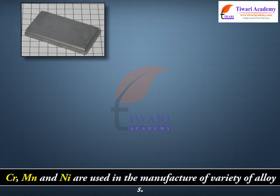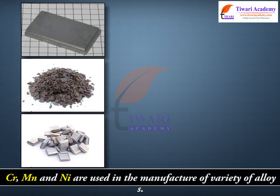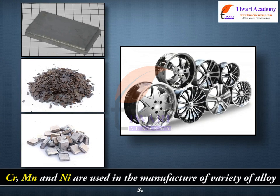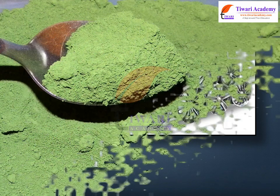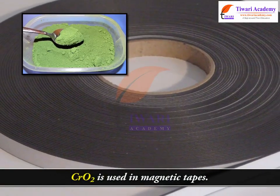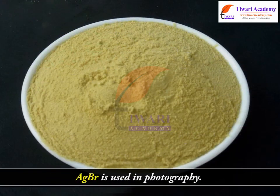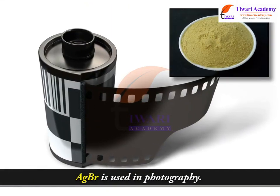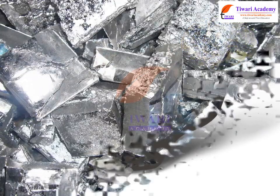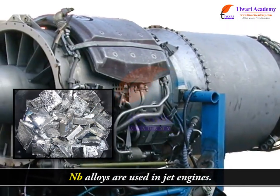Cr, Mn, and Ni are used in the manufacture of a variety of alloys. CrO2 is used in magnetic tapes. AgBr is used in photography. Nb alloys are used in jet engines.